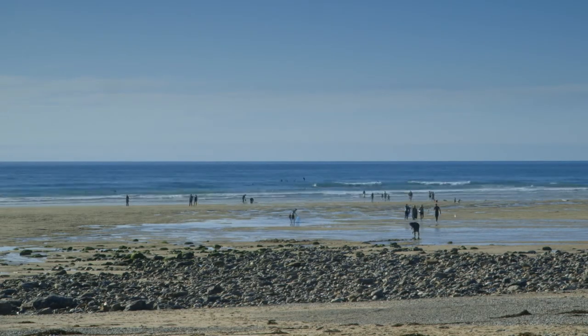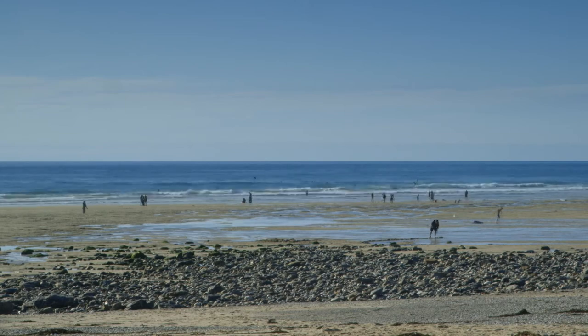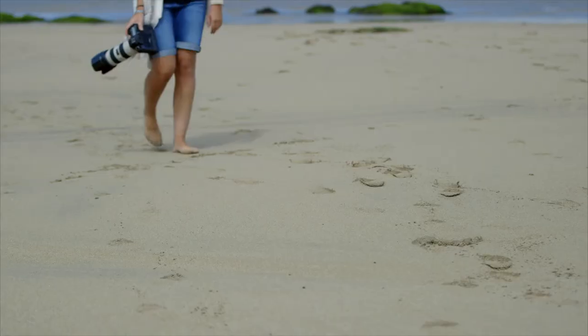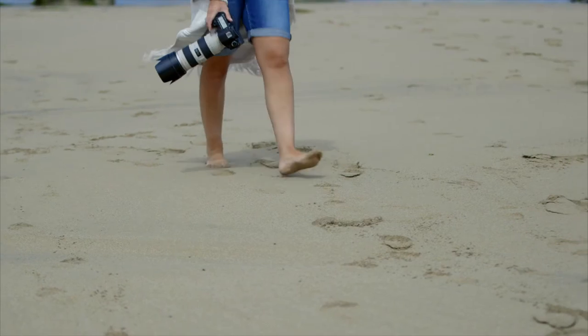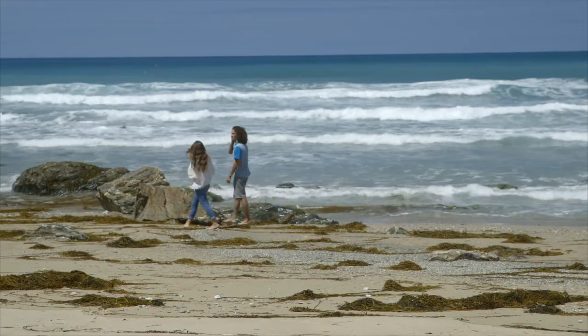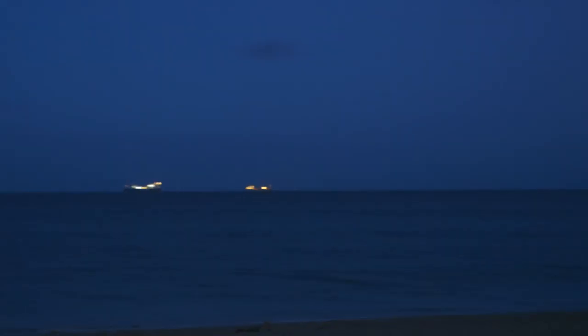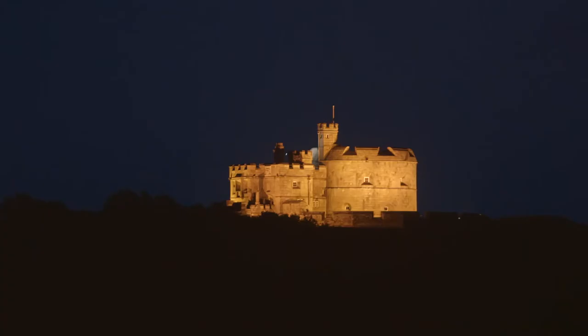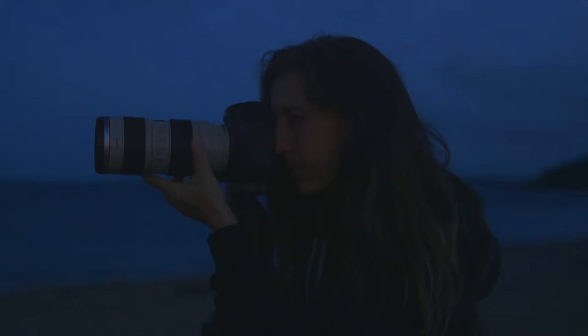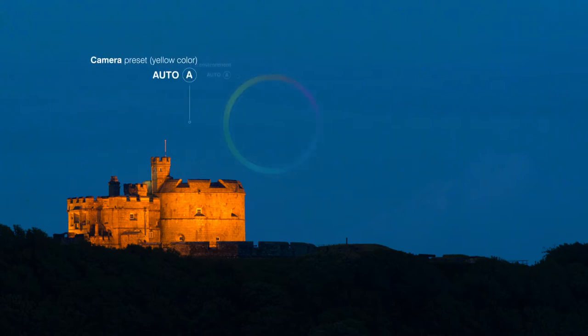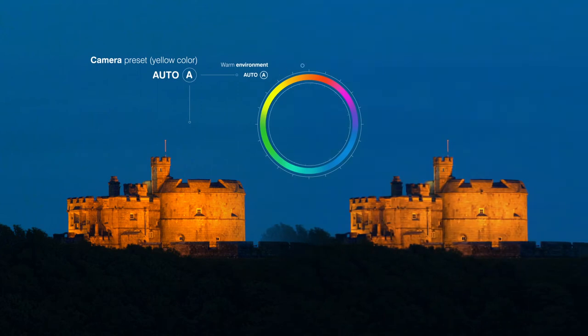The purpose of these presets is to counteract the colour cast that you may see when shooting with a particular light source. Your camera doesn't know what environment or light conditions you are working in, so it can get a little confused. You can leave your camera set to Auto so that it will calculate the white balance for you, but the results can vary and your camera could decide what colour it thinks your subject should be. In this example, the artificial light is rendered far too yellow, so we correct this by choosing the Tungsten preset, which introduces more blue.